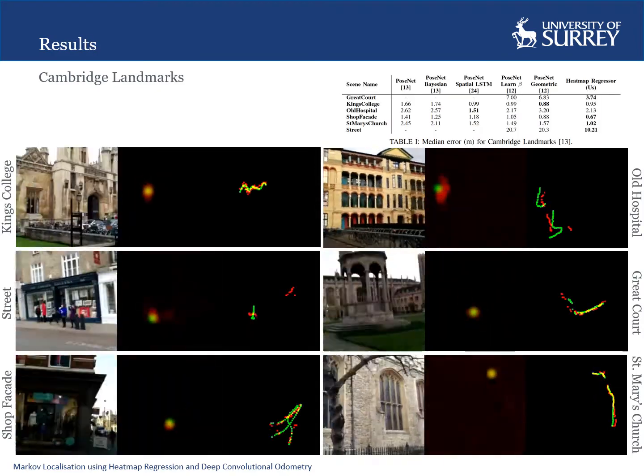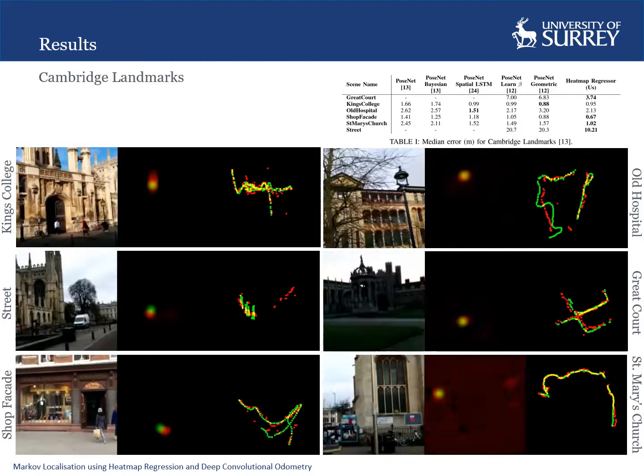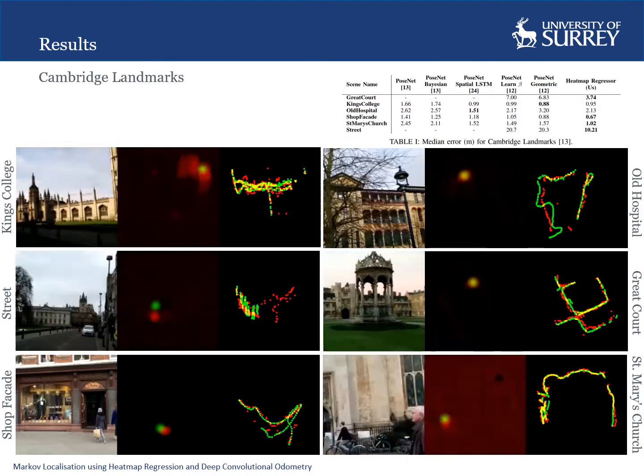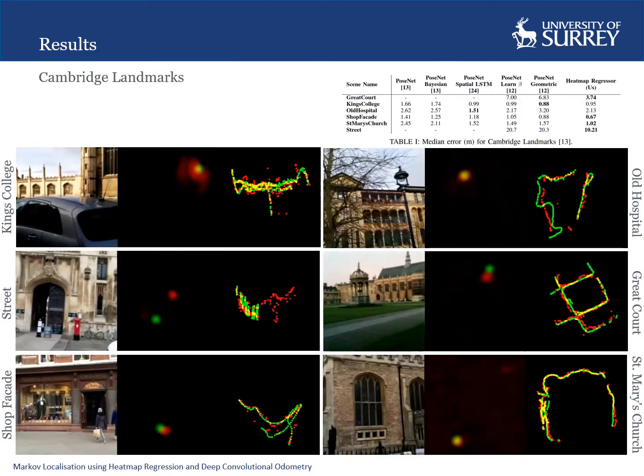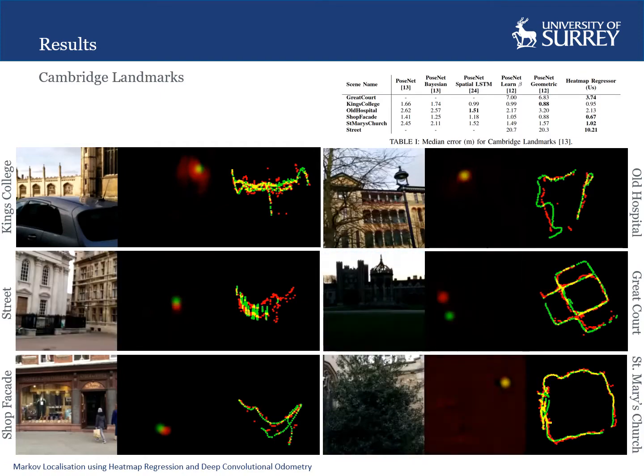Here we see the heatmap regressor predicting heatmaps for each of the scenes on the Cambridge Landmarks. Our results show that the heatmap regressor can outperform the state-of-the-art on the Cambridge Landmarks dataset. On the top right, we see that quantitatively, our model outperforms the state-of-the-art in all but two of the sequences.